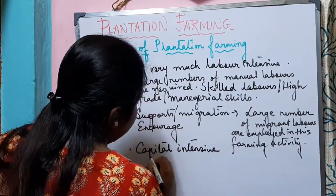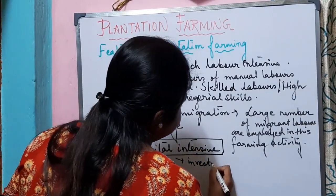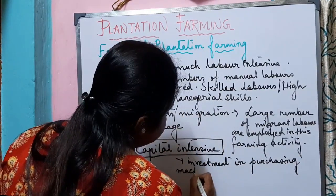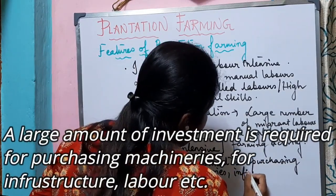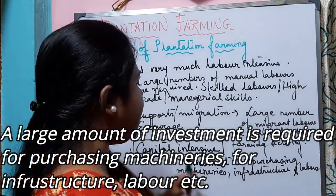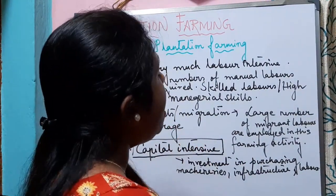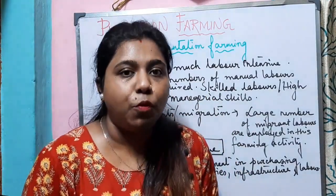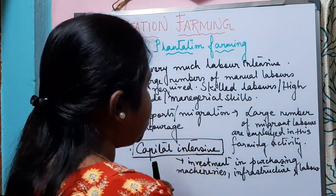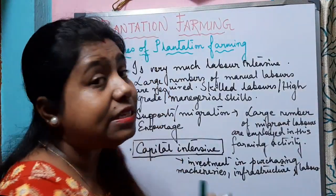This farming activity is capital intensive — in fact the most capital intensive — because it needs a lot of investment in purchasing machineries, for the infrastructure, and for labor. While manual laborers are sought at cheap rates, a lot of investment has to be made to hire high-grade labor with great managerial skills. Machineries must be purchased from foreign countries, and a lot of capital has to be invested in the infrastructure of this type of agriculture.